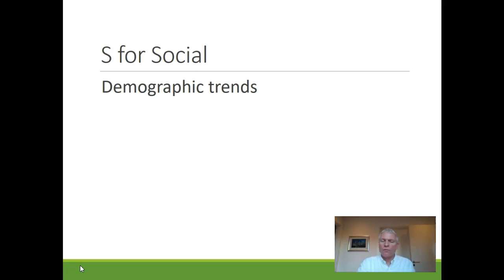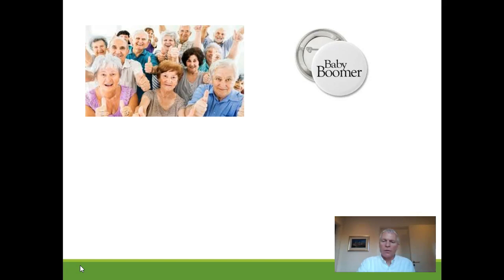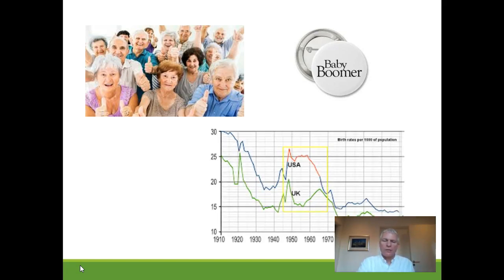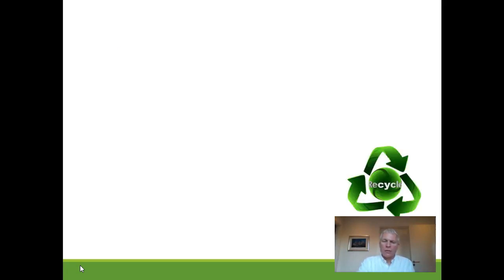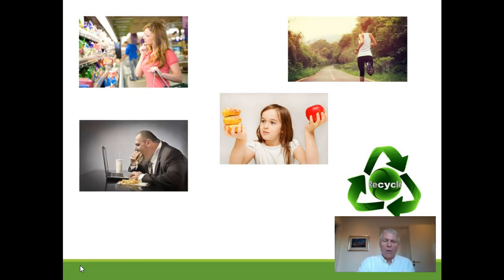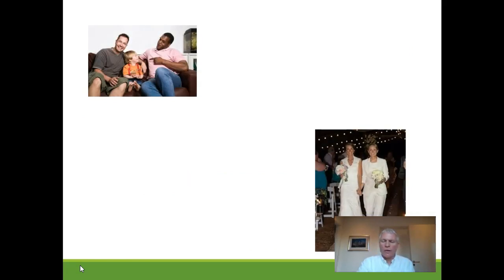Next, think about the S for social or sociocultural factors. Consider demographic trends like population growth and age distribution. One example is the aging population in most western countries as the baby boomers have reached retirement age. On one hand, it is a threat to firms producing products and services targeted at a younger demographic. On the other hand, it creates new opportunities to sell products or provide services to this group. Other factors worth noting are lifestyle factors like increased health consciousness colliding with growing obesity, environmental awareness, and the rapidly increasing acceptance of gays, lesbians and transgenders, which could also create possibilities for your business.